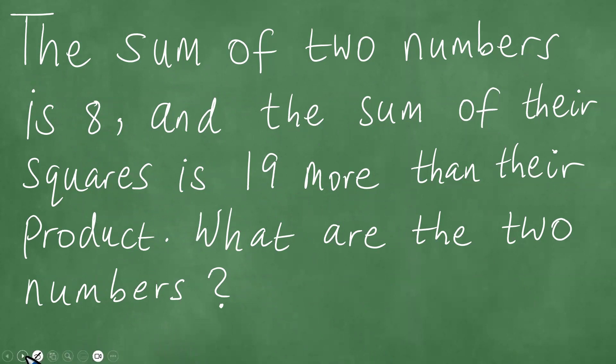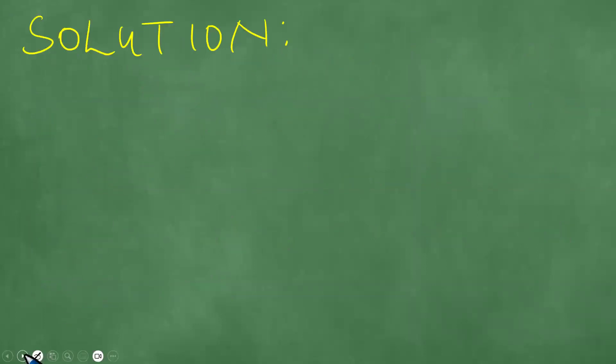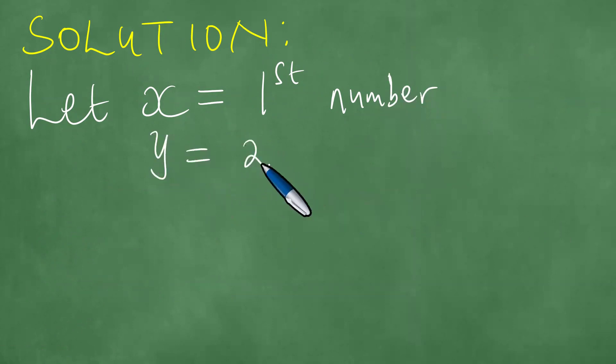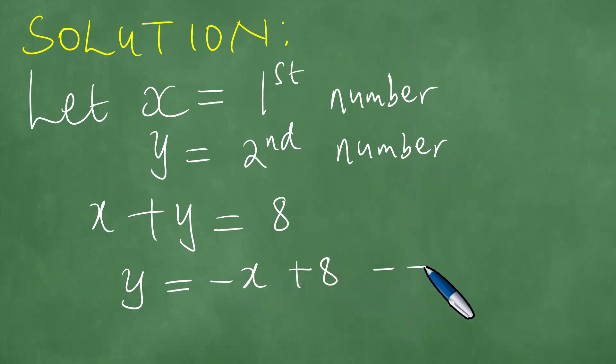So we need to solve this problem and we present a solution, noting first that the sum of the two numbers is 8. We start writing down the solution and we say let x be equal to the first number, and y would be the second number. So then the sum of these numbers, we add them up and the result is 8. This then means, therefore, we can make y the subject and this is y = -x + 8, call this the first equation.